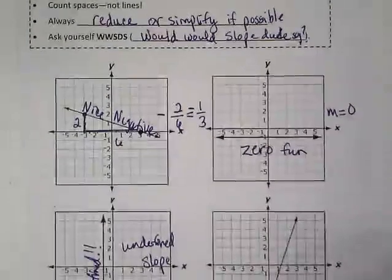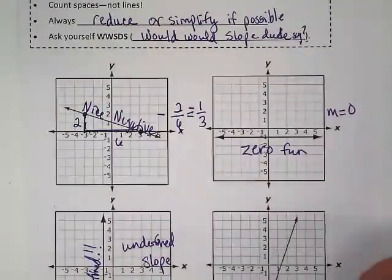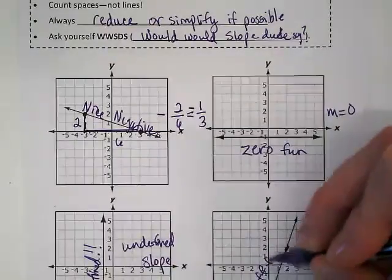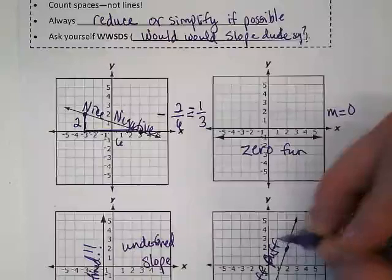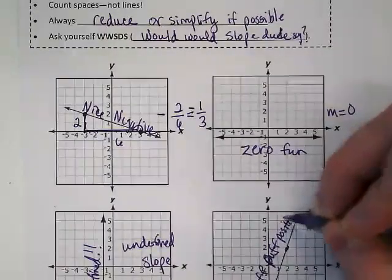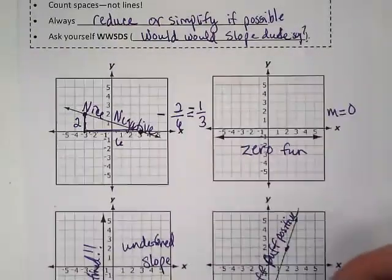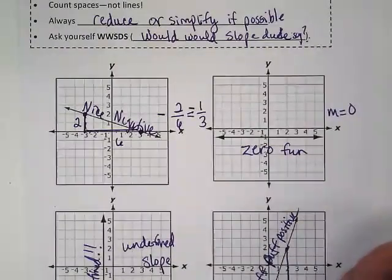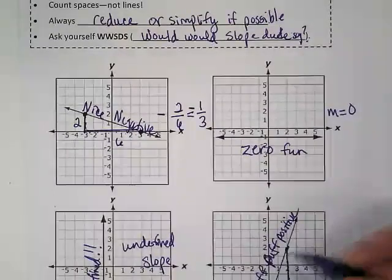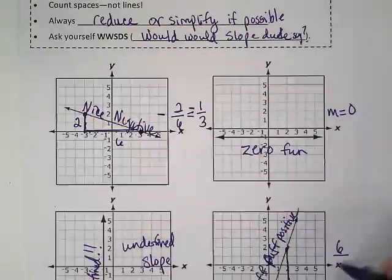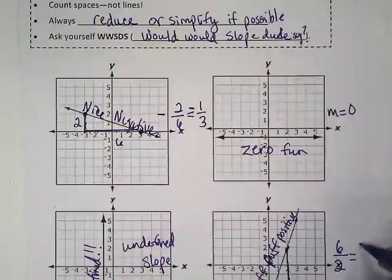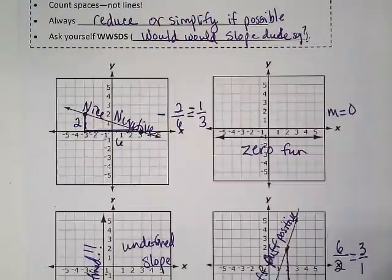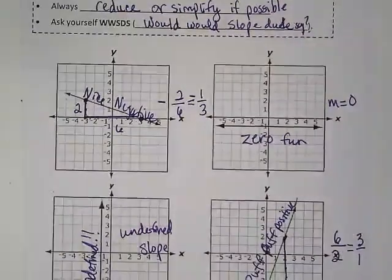And finally, if I find two points on this line, I'm going to notice it's positive. My triangle can come this way. And I'm looking at a rise of one, two, three, four, five, six, and a run of two, which can be reduced down to three over one. So you could simply say the slope here is three or three over one.